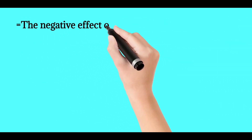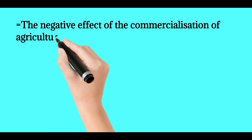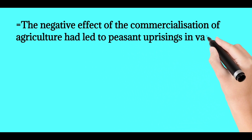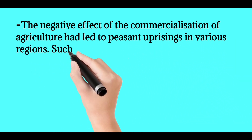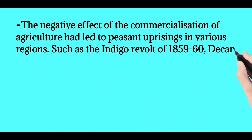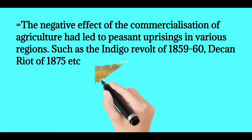The negative effect of the commercialization of agriculture had led to peasant uprisings in various regions, such as the Indigo Revolt of 1859-60 and the Deccan Riot of 1875, etc.